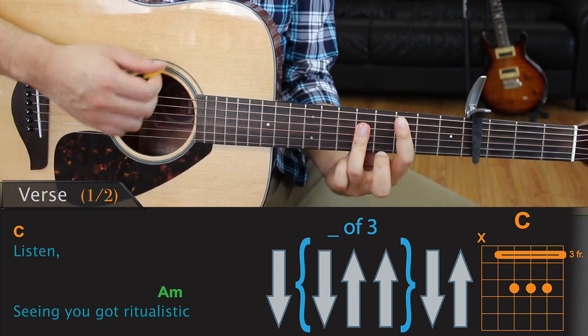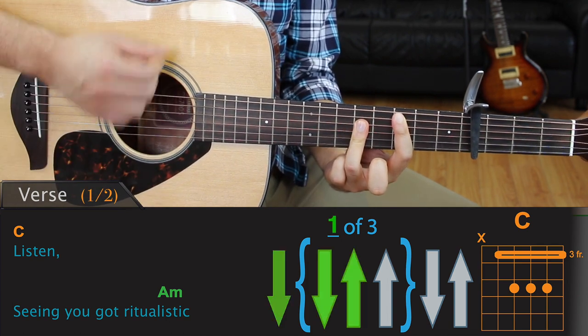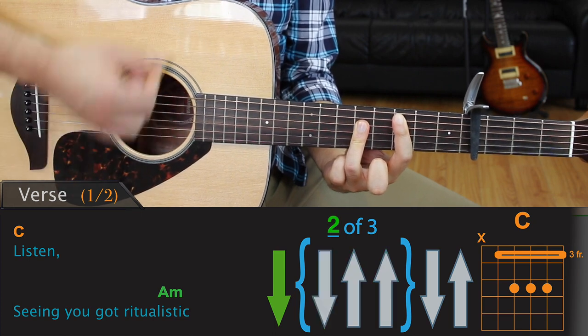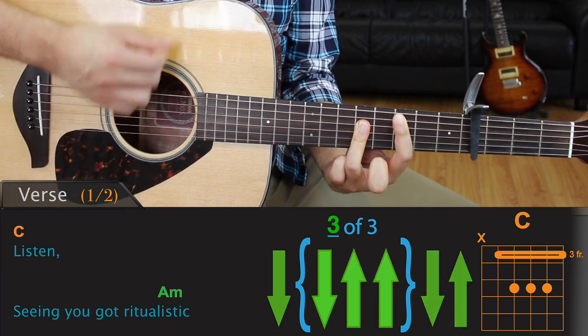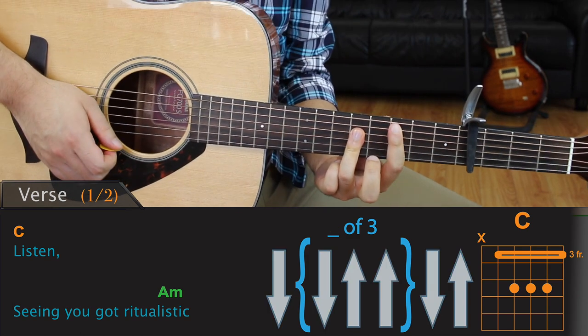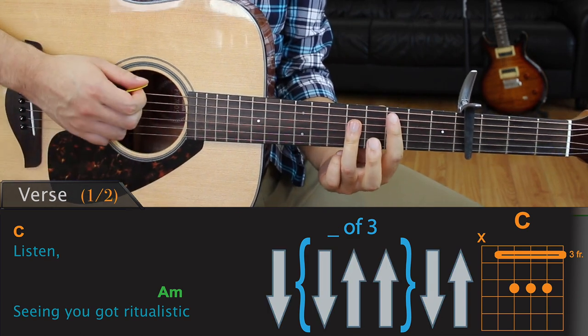This is how that'll sound like really slowly. Down, down, up, up, down, up, up, down, up, up, down, up. Each of the four chords will be strummed the same way, starting with the C.